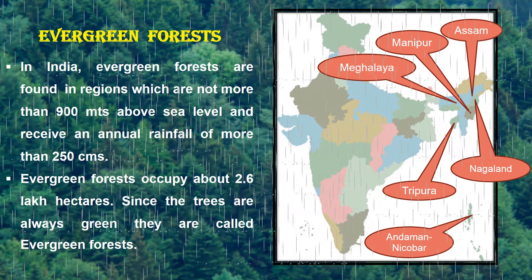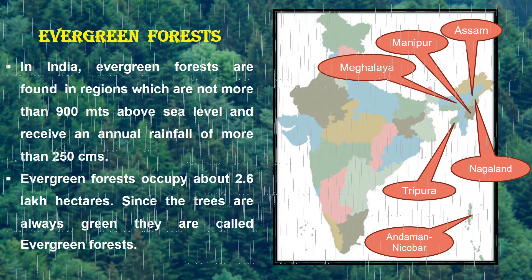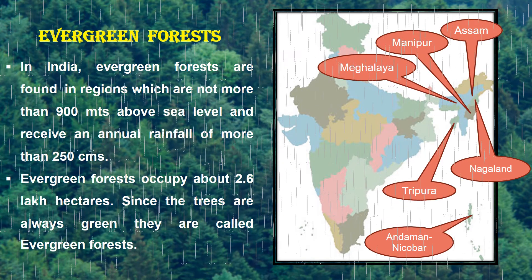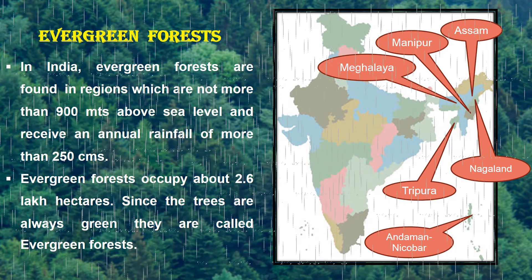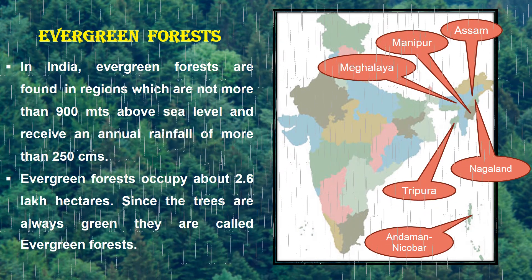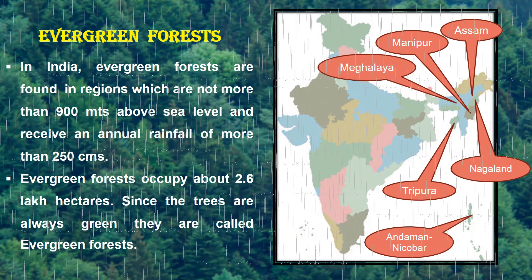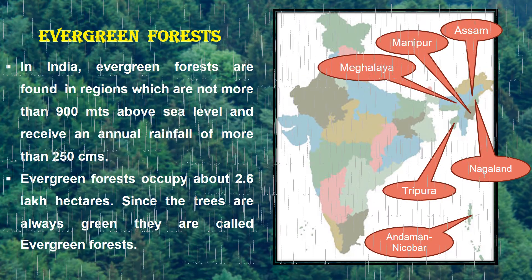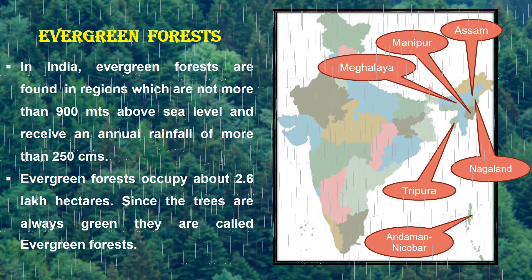Evergreen forests occupy about 2.6 lakh hectares. Since the trees are always green, they are called evergreen forests.